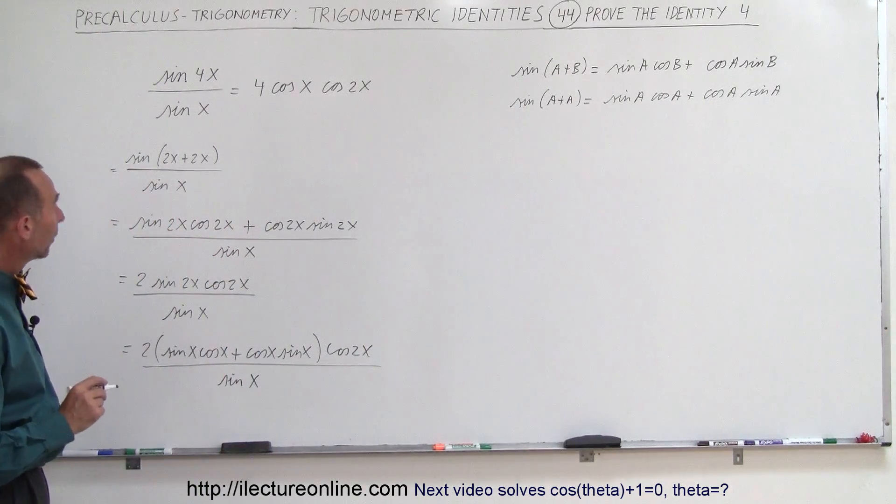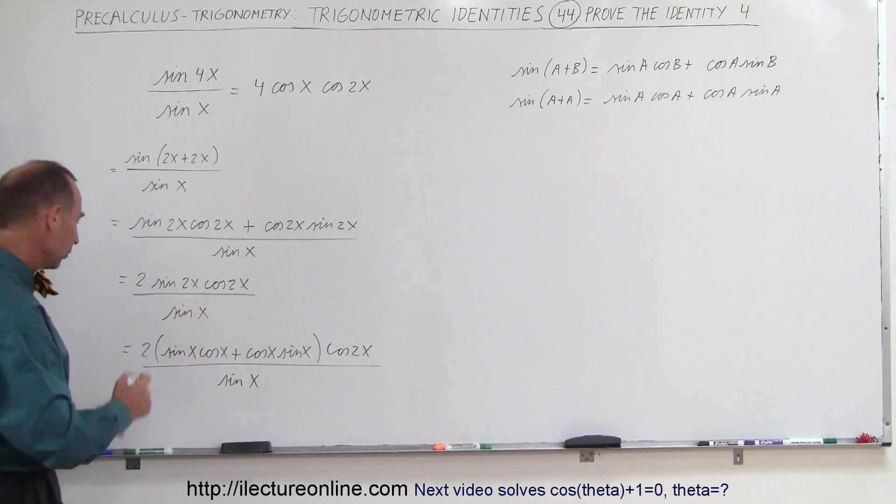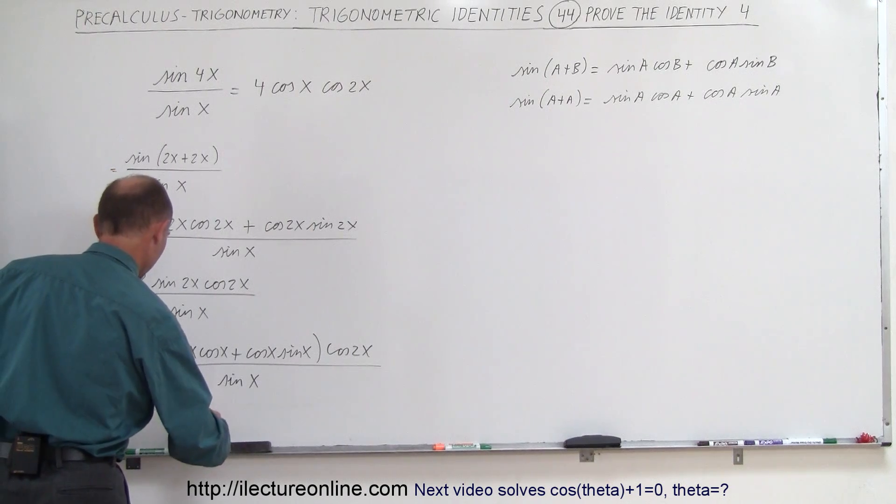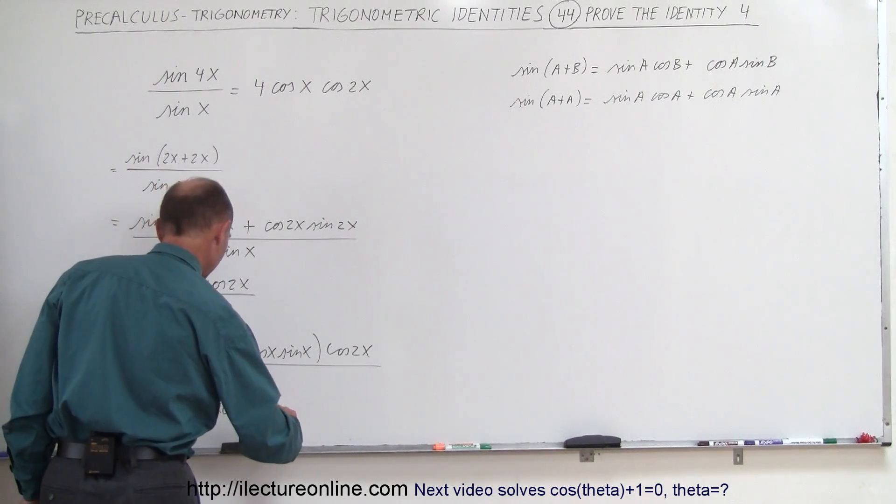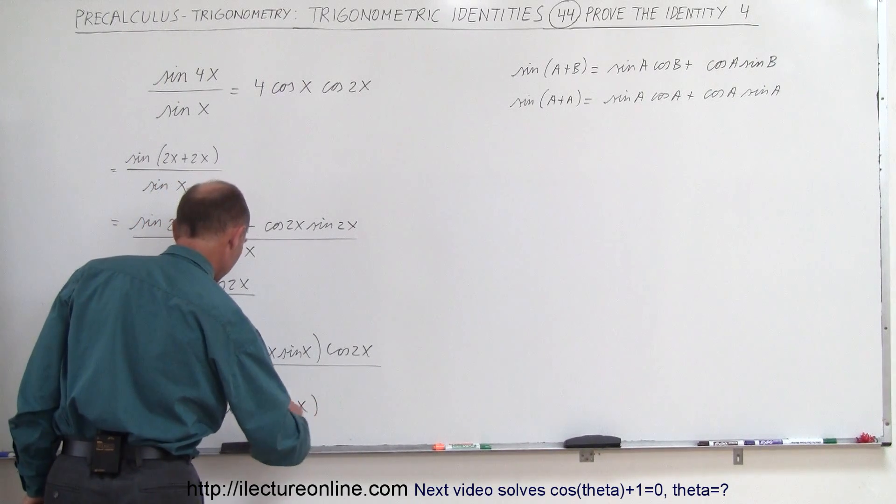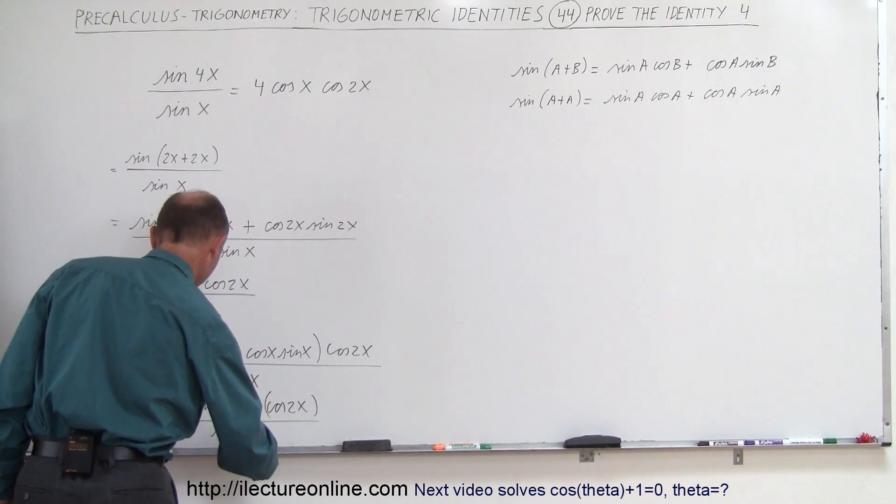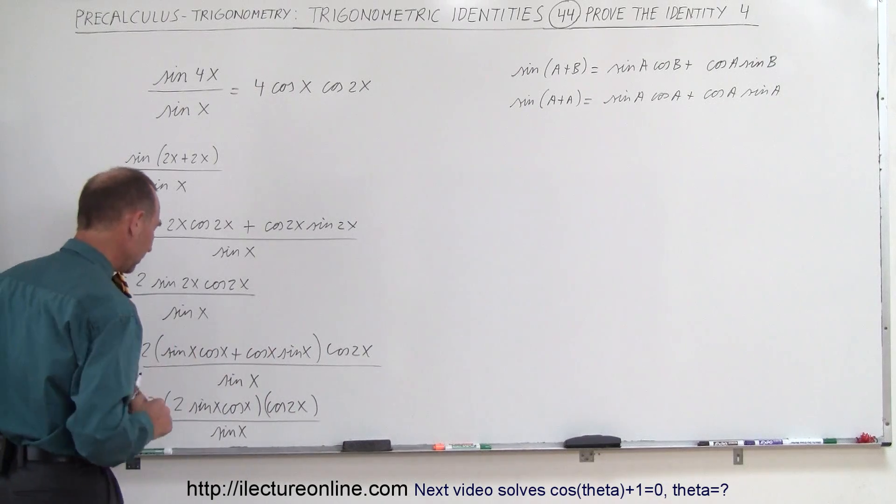Alright, so now what I have here is I can combine those two, so this is equal to two times two times the sine of x times the cosine of x times the cosine of 2x all divided by the sine of x. Since these are exactly the same, I can simply add them together.